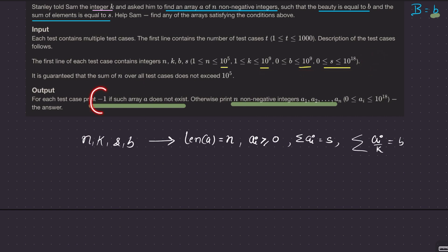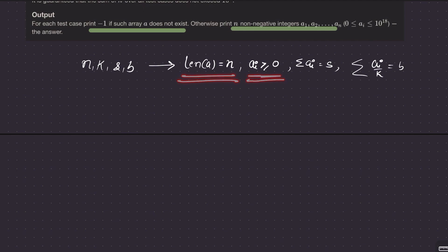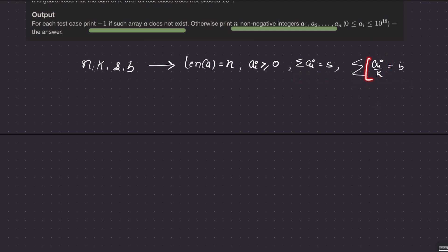For each test case, print minus 1 if such array does not exist; otherwise, print n non-negative integers satisfying the conditions. The question can be summarized in one line: given n, k, s, b, find an array of n non-negative integers such that the sum equals S and the beauty — that is summation of floor(a_i / k) — equals B.